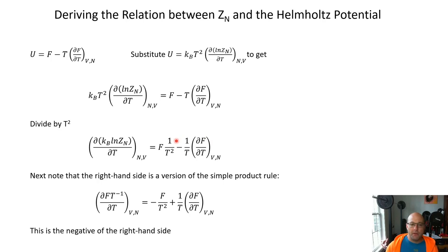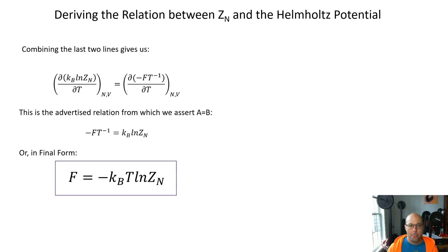And this mass it turns out is an application of a simple product rule for derivatives. And so we can just note that if you took the partial derivative with respect to temperature of F times T to the minus one you would get minus F over T squared plus one over T dF dT and that's just the negative of this right hand side right up here. So basically this expression is equal to the negative of this expression and that's exactly what our strategy was for developing this relationship.